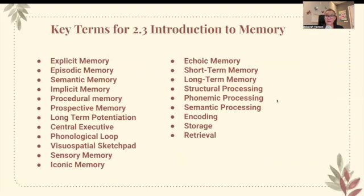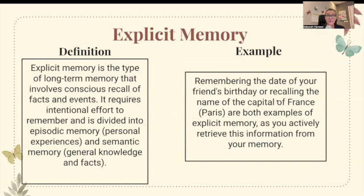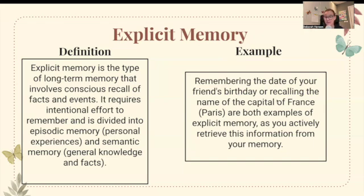Explicit memory is the type of long-term memory that involves conscious recall of facts and events. It requires intentional effort to remember and is divided into episodic memory — your personal experiences — and semantic memory — general knowledge and facts. For example, remembering the date of your friend's birthday or recalling the name of the capital of France, Paris, are both examples of explicit memory, as you actively retrieve this information from your memory.